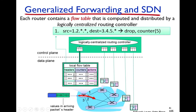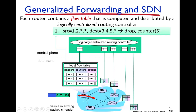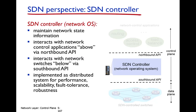Regarding generalized base forwarding: the switch flow table is basically generalized data plane forwarding. A switch has a flow table that is not only destination-based but can also be based on IP source, IP protocol, MAC destination, MAC source, etc. Actions are not only forwarding but also include encapsulation, drop, send to normal processing, and modify.